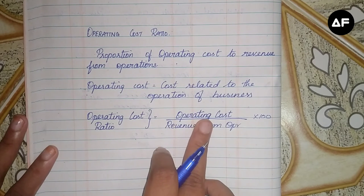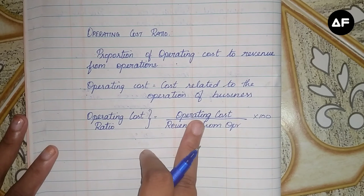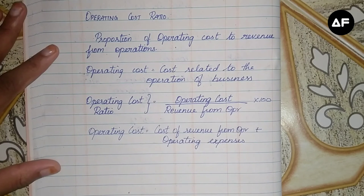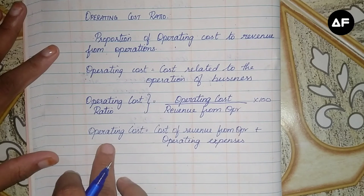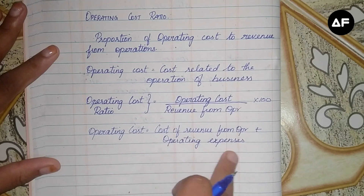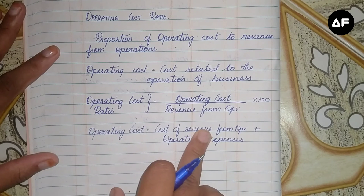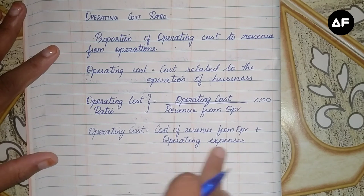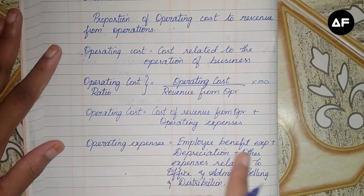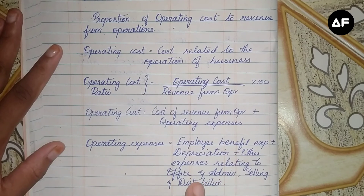There is one formula for operating cost: operating cost is cost of revenue from operations plus operating expenses. The sub-formula is to find out the operating expenses. Cost of revenue from operations we already know how to calculate. Operating expenses are employee benefit expenses plus depreciation and all other expenses relating to office.